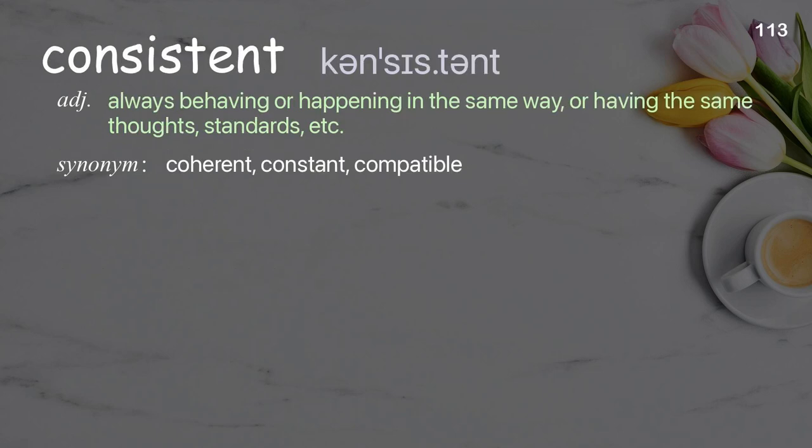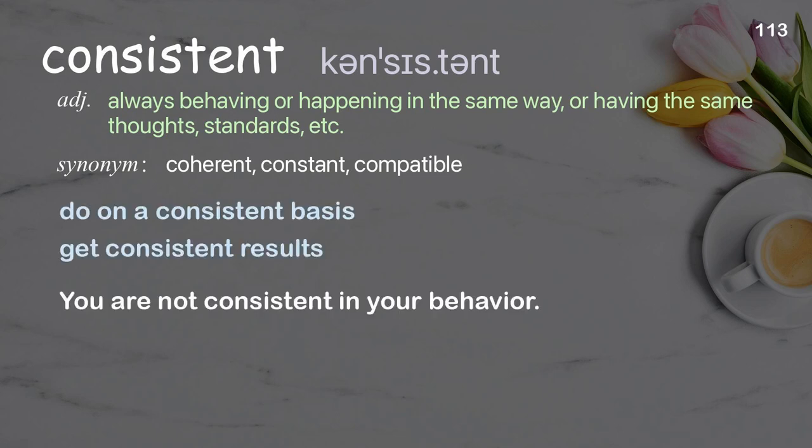Consistent: Always behaving or happening in the same way, or having the same thoughts, standards, etc. Examples: Do on a consistent basis. Get consistent results. You are not consistent in your behavior.